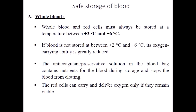For whole blood and red blood cells, the storage temperature is between 2 to 6 degrees Celsius — normally stated as 4 plus or minus 2. If not stored under this range, the oxygen-carrying capacity is greatly reduced. The anticoagulant or preservative solution in the blood bag provides nutrients and prevents clotting during storage. Red blood cells can carry and deliver oxygen only if they remain viable.